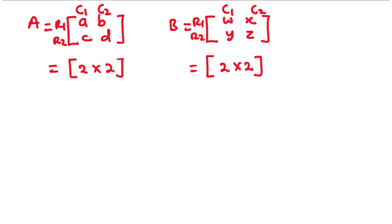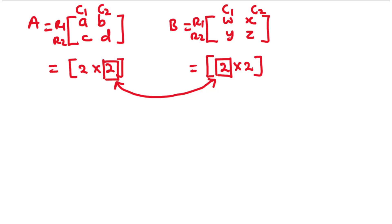To multiply two matrices, you need to make sure that the number of columns of the first matrix is equal to the number of rows of the second matrix. If these two values are the same, then we can multiply the two matrices. However, if these two numbers are not the same, then we cannot multiply them and we say that the two matrices are not compatible under multiplication.